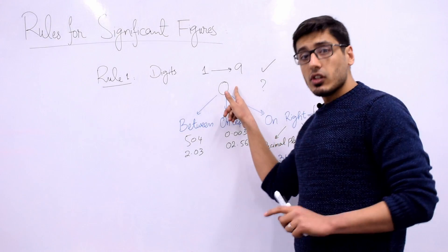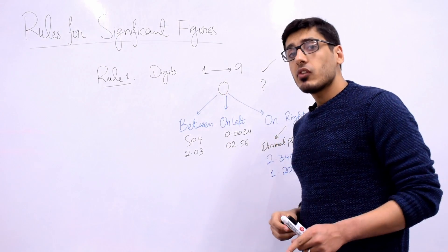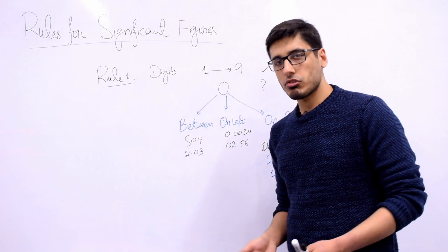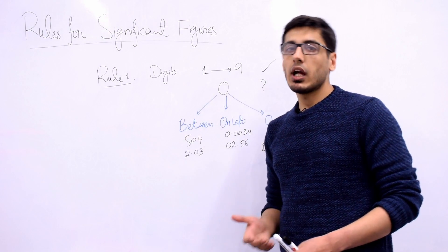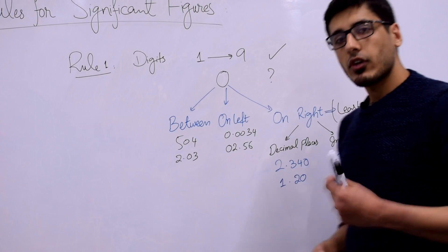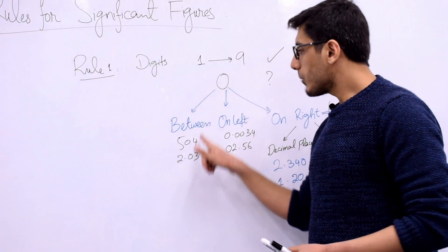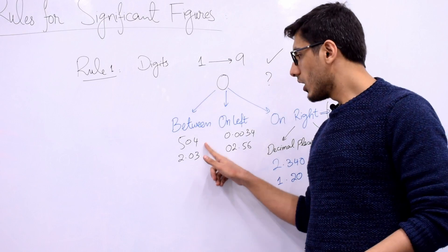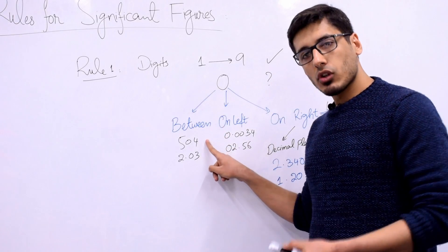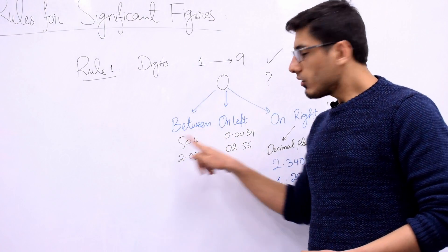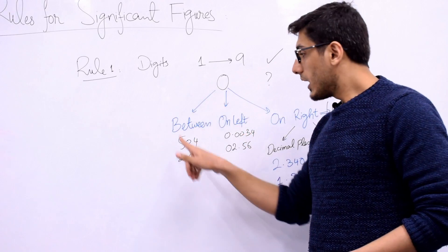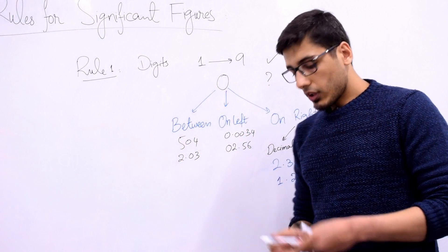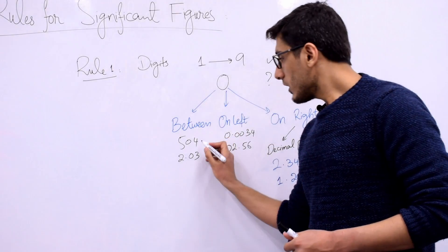Now, if you have a zero in your measurement, it can be significant or it cannot be significant — it depends. Let's look at when zero is significant and when it is not. First, if zero comes in between two significant figures, it is going to be significant. For example, in the reading 5.04: 5 is significant, 4 is significant, and since zero is sandwiched in between, it is also a significant figure. So the number of significant figures here is 3.